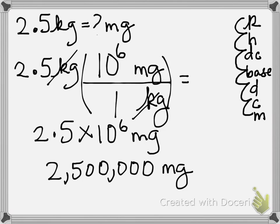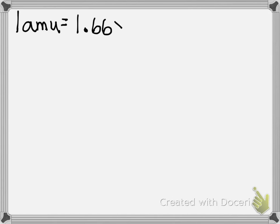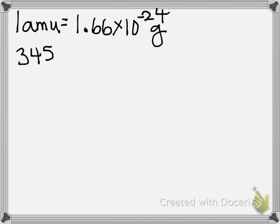I realize most of these have been simple enough that you could have done them like you learned in middle school by just moving decimal places. Number nine comes to our first one that is not that way. It tells us that 1 AMU equals 1.66 times 10 to the negative 24th grams. Using a conversion factor, find the number of grams in 345 AMUs.